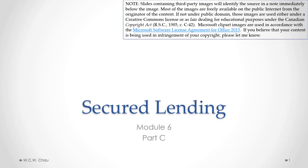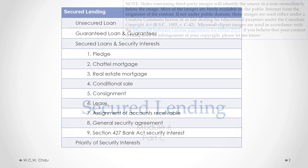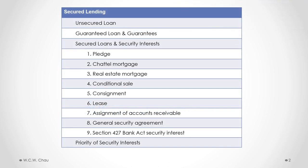Hello, it's Waylon Chow. This is Secured Lending Module 6, Part C. In this part we will look at the priority of security interests.